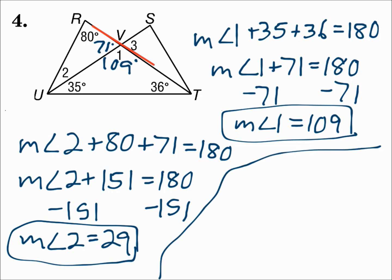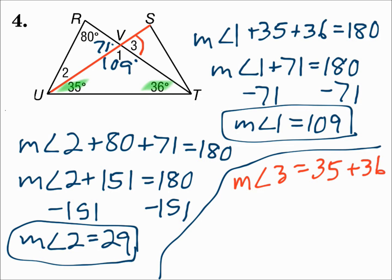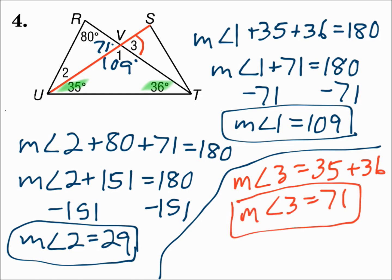Now for the measure of angle three. There are different ways to find it, but we can use the Exterior Angle Theorem. If you extend the side of the bottom triangle, angle three is an exterior angle of that triangle, and 35 and 36 are the remote interior angles. The exterior angle theorem says the exterior angle is the sum of the remote interiors, so the measure of angle three is 35 plus 36, which is 71 degrees.